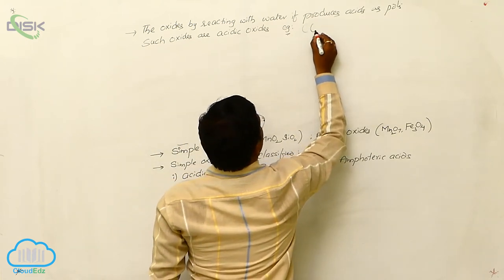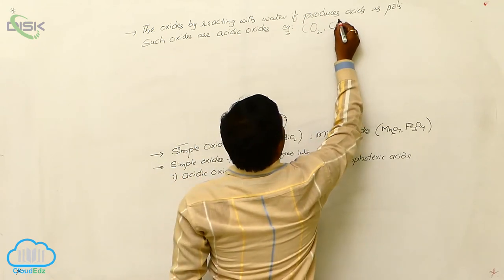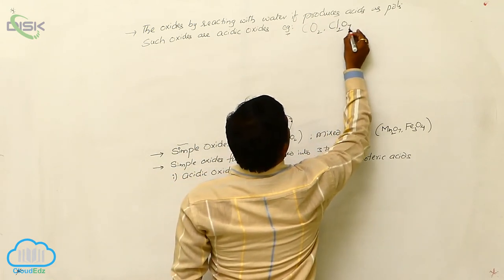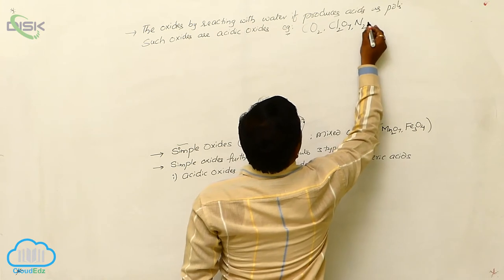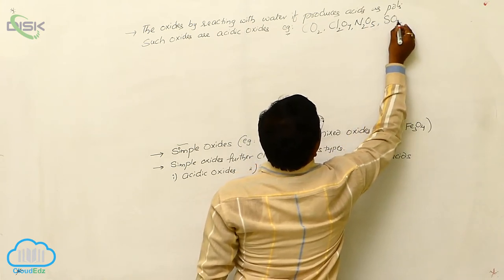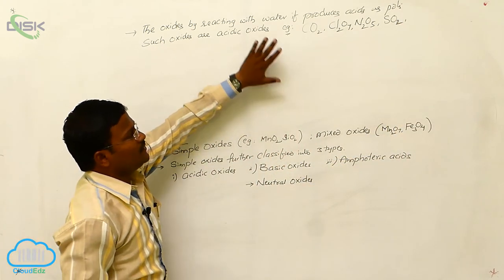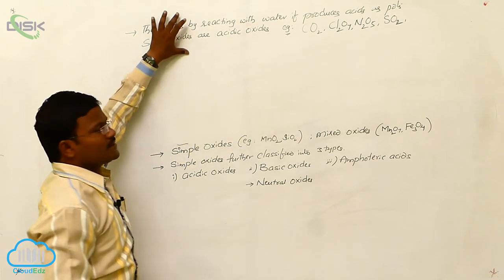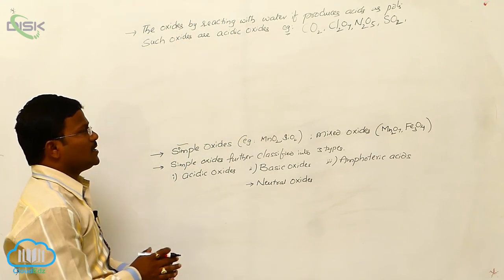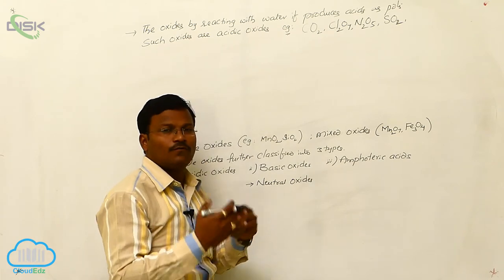Let us have some examples for acidic oxides. Carbon dioxide, Cl2O7, N2O5, SO2, SO3, etc. What are all these? Oxides. These oxides are called as acidic oxides. Why? Because, when these oxides reacted with water, they produces acids.